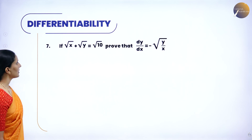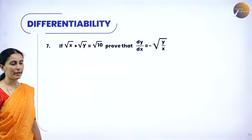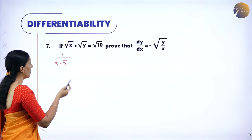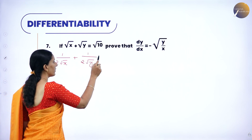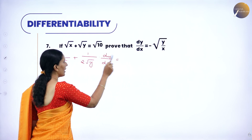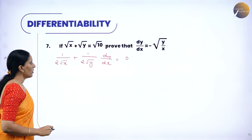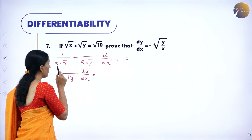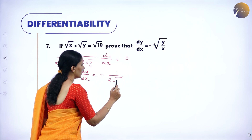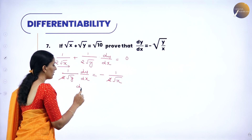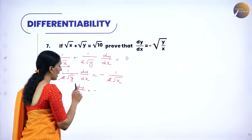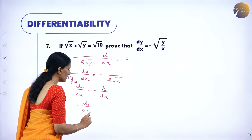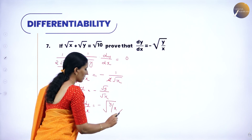Next: if root x plus root y equals root 10, prove that dy by dx equals minus root (y by x). Derivative of root x is 1 by 2 root x. This is an implicit function — differentiate x and y simultaneously. So 1 by (2 root x) plus 1 by (2 root y) into dy by dx equals 0. Rearranging: dy by dx equals minus (1 by 2 root x) divided by (1 by 2 root y), and cancelling the 2's, dy by dx equals minus root y by root x, which equals minus root (y by x). Hence proved.